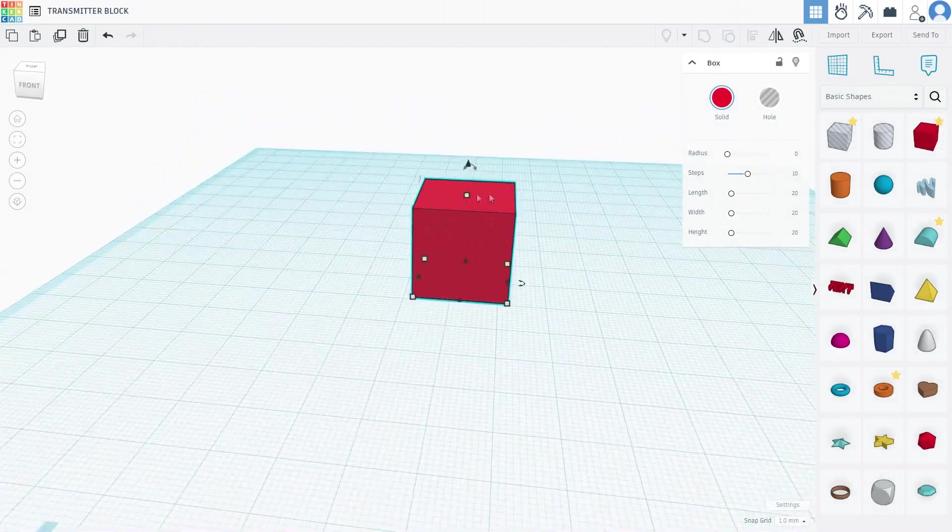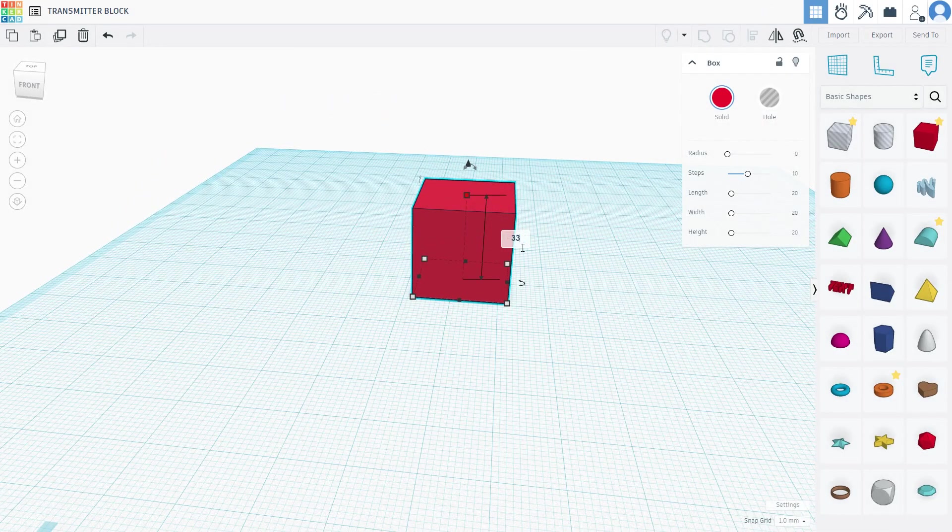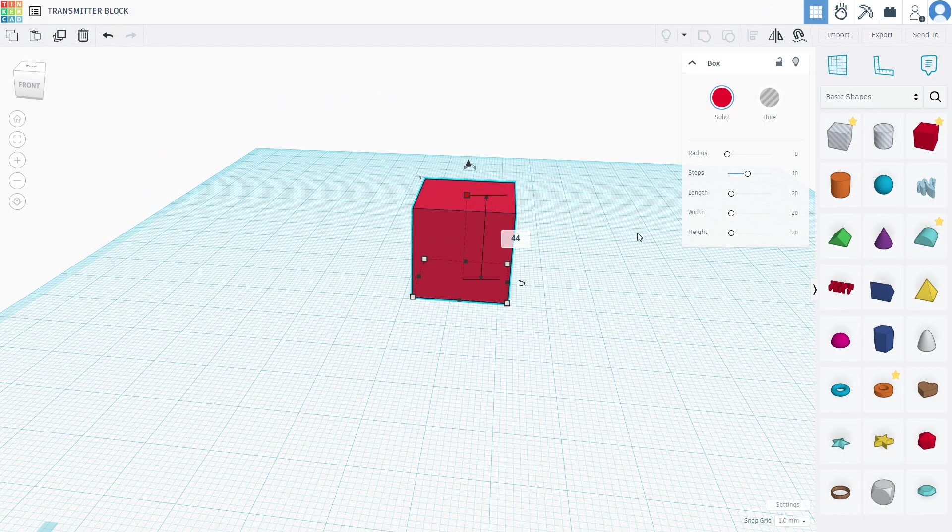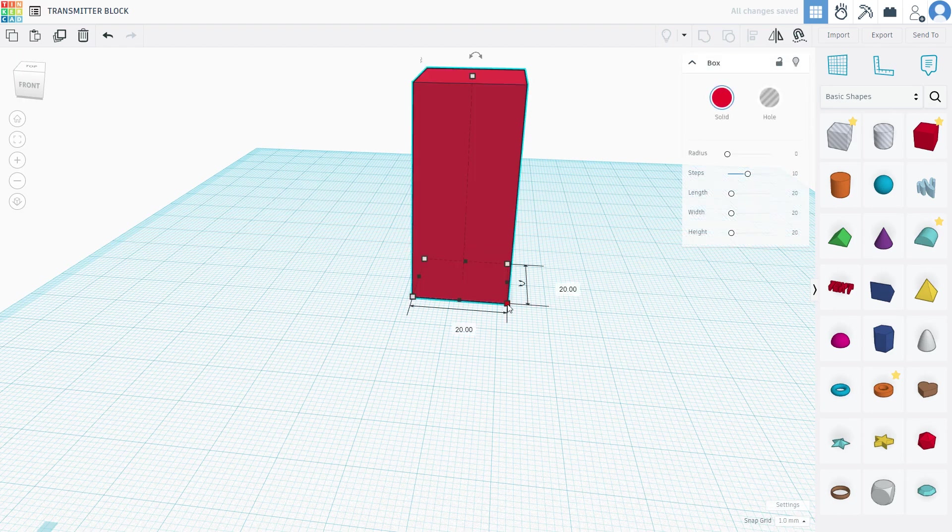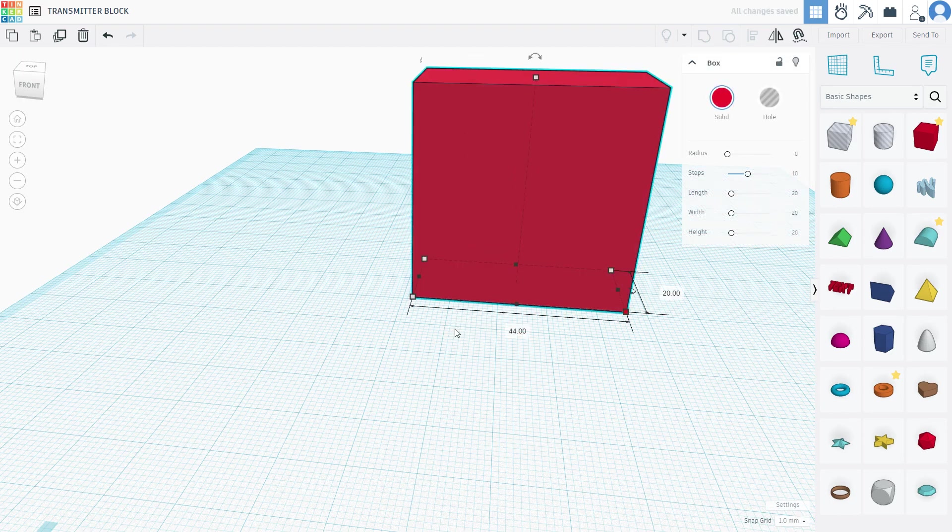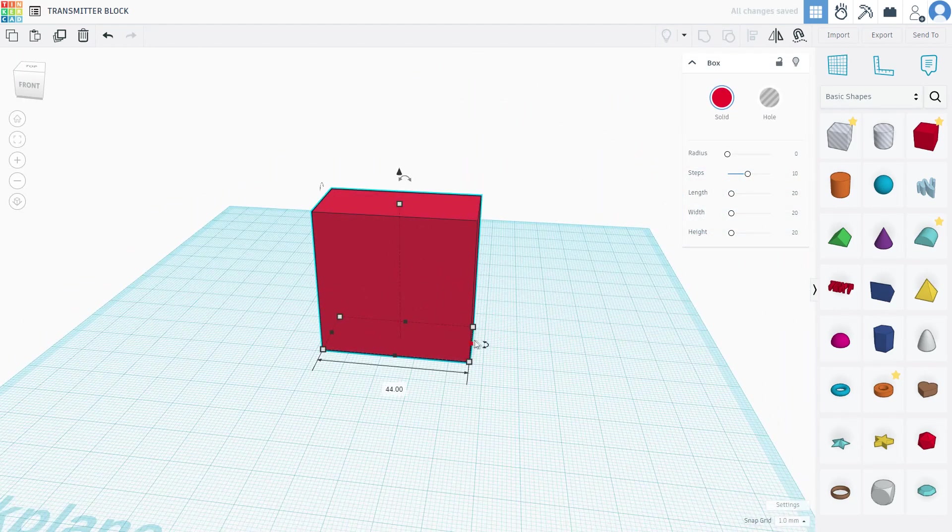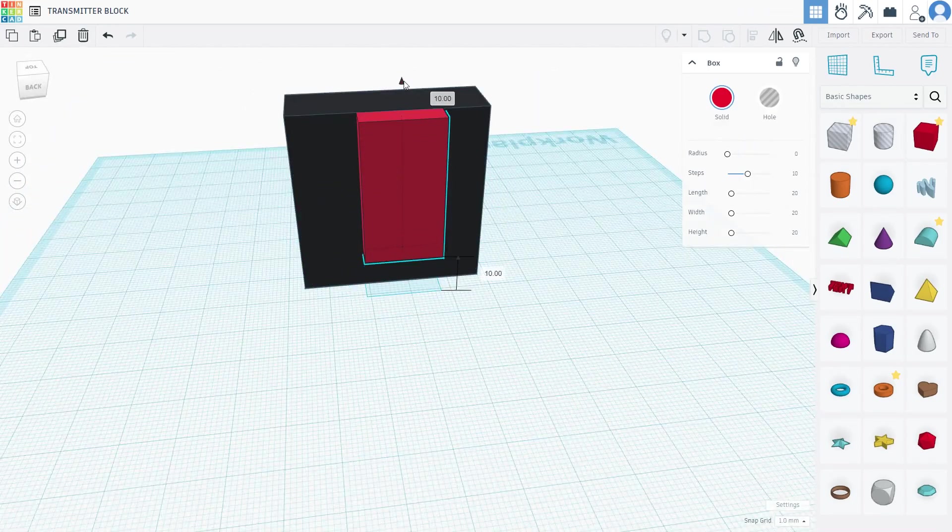We're going to be using Tinkercad to do our 3D modeling. This is a free online web browser modeling software. It's about as easy and basic as you can get for 3D modeling. All a guy has to do is just drag the shapes off the side onto the plane, drop them down, and start punching in dimensions. Next thing you know, we're going to have ourselves a 3D model.